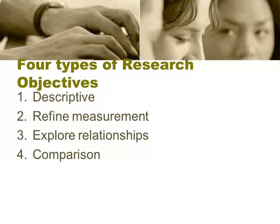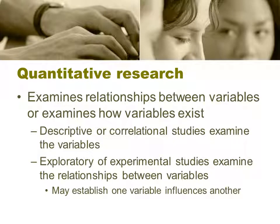There are four types of research objectives. For example, we can be talking about descriptive, we can refine a measure, we can explore relationships, or we can compare different groups. Quantitative research examines the relationship between variables or examines how variables exist. Descriptive or correlational studies examine the variables, while exploratory experimental studies examine the relationship between variables and may establish how one variable influences another.